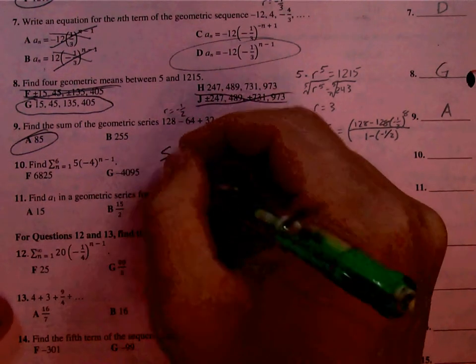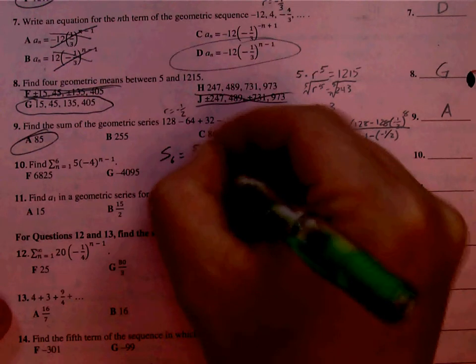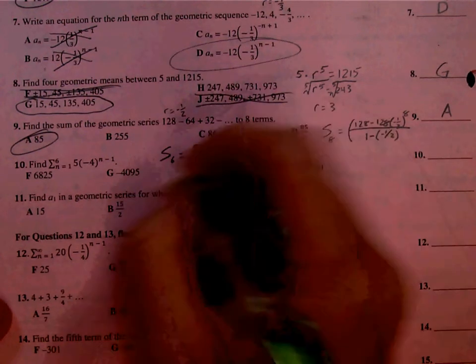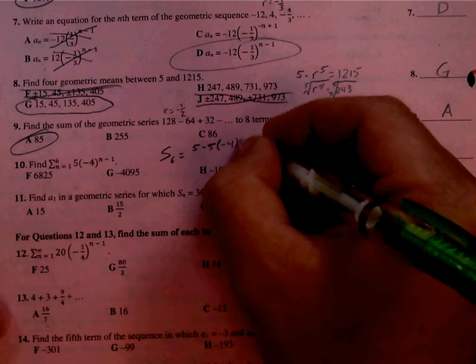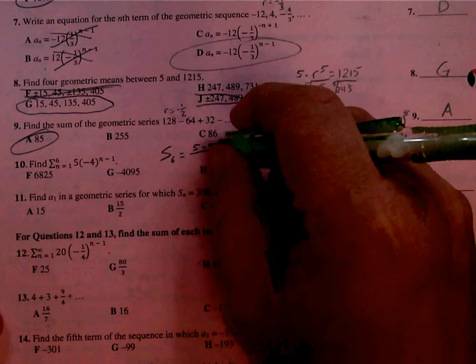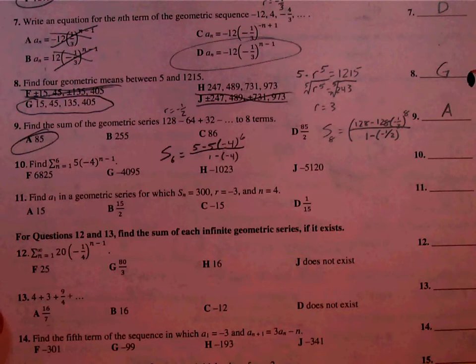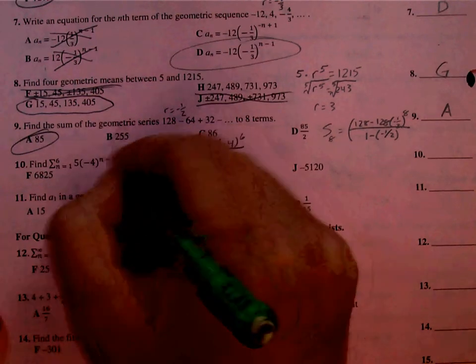Number 10. 6 terms. First term is 5. R is negative 4. We see that because it's the one with the exponent on it. To the power of 6 over 1 minus negative 4. Plug that in the calculator. Looks like we get negative 4,095, so that's G.